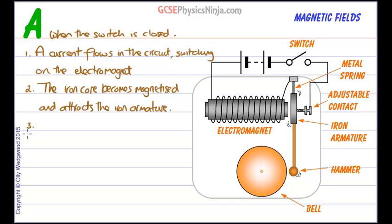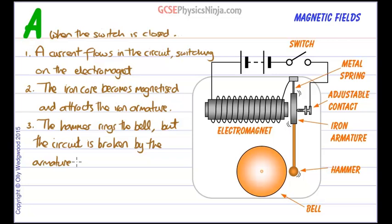Number three, when that iron armature is pulled inwards, the hammer rings the bell. But when that happens, the circuit is broken by the armature moving away from the adjustable contact.